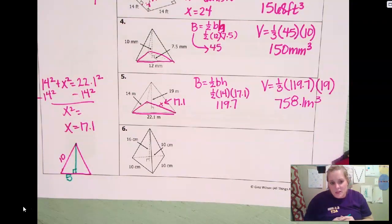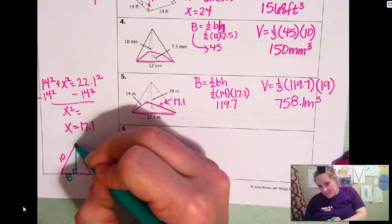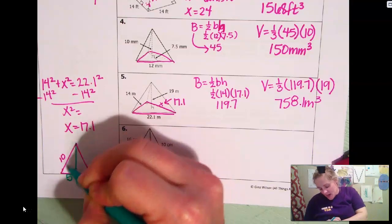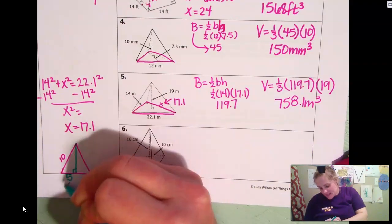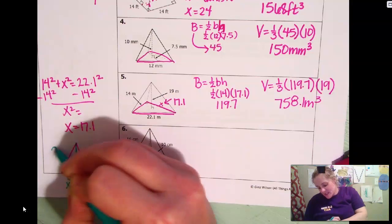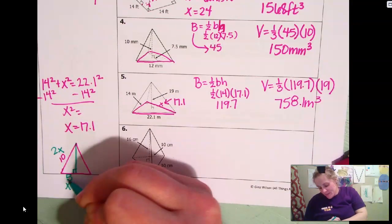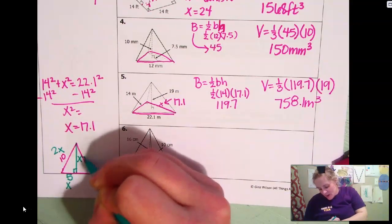And we're dealing with a 30, 60, 90. This is 60. We split that one in half. That's 30. Across from x. I'm sorry. Across from 30 is x. Across from the 90 is 2x. And then across from this is x square roots of 3.